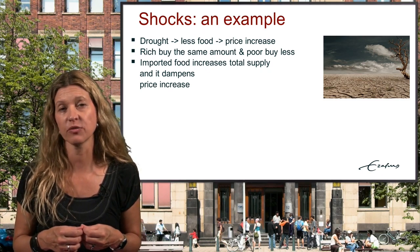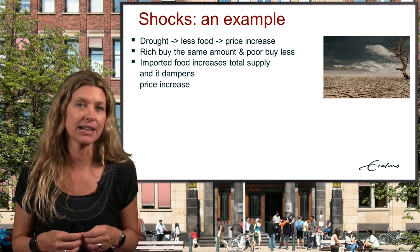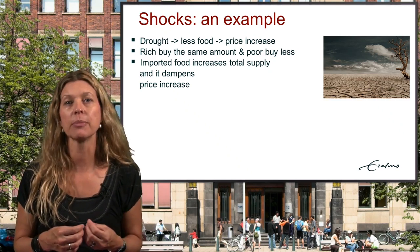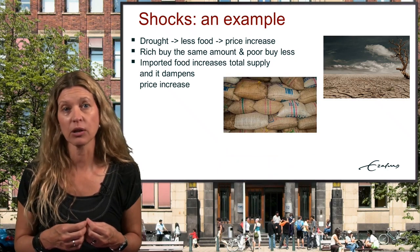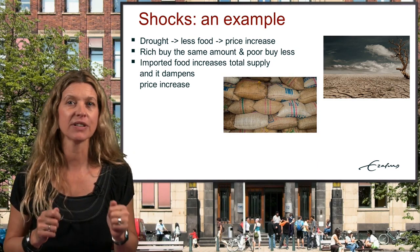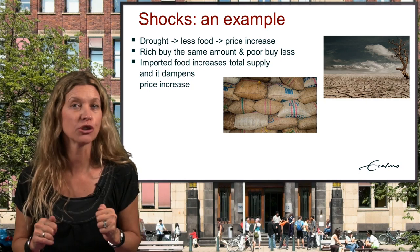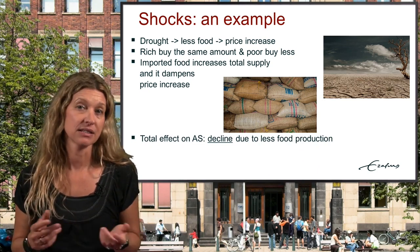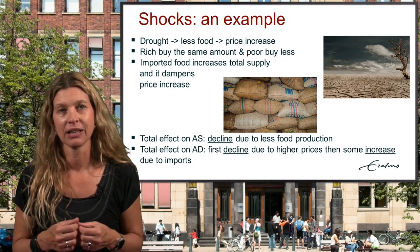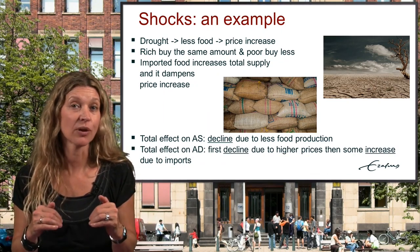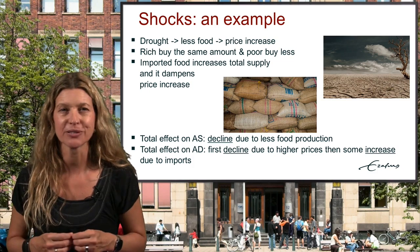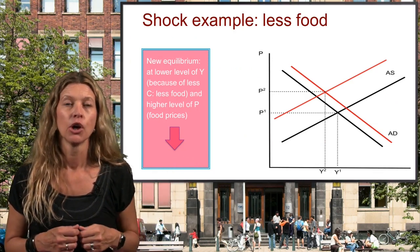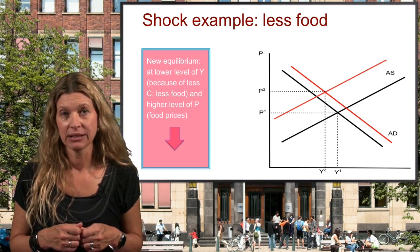As a consequence, the rich can still afford buying food — they spend more, and may buy a bit fewer luxury goods instead. The poor buy less food; some go hungry. The domestically produced food may become more expensive than imported food, so the food market now also includes imported food. This increases the food supply again, so that prices will go down again towards a new equilibrium and consumption expands a bit. The total effect on AS is a decline due to less food production, and the total effect on AD is first a decline due to higher prices, then some increase due to imports. This is shown in the diagram. The old AS and AD are the black lines, and the food shock shifts AS to the left because food production is less.